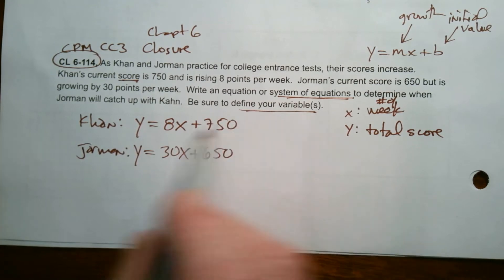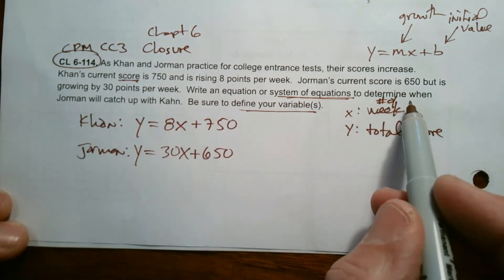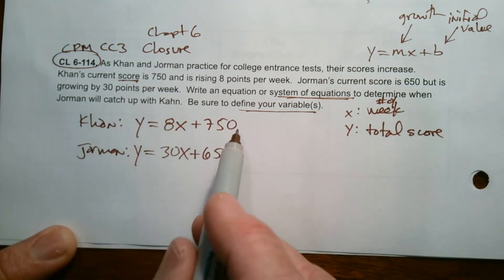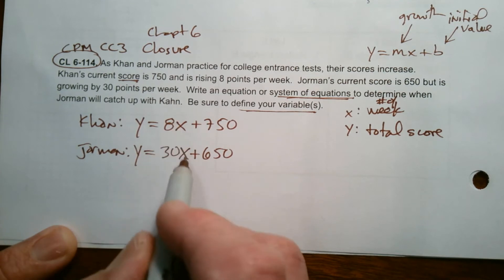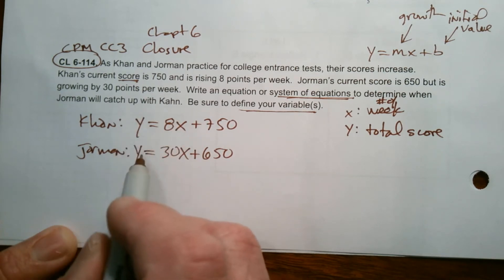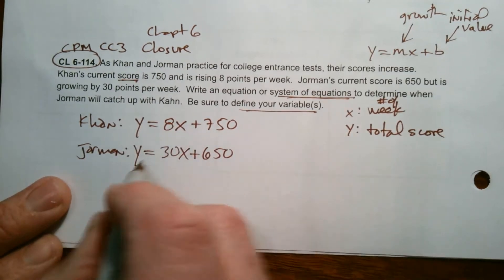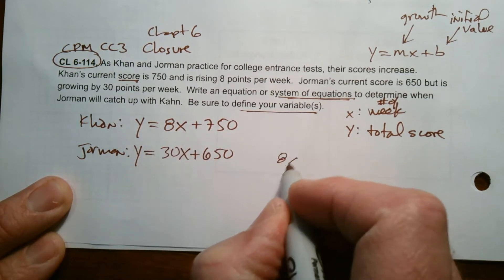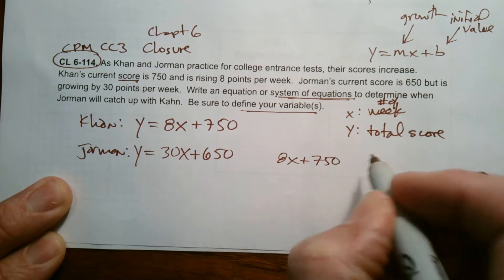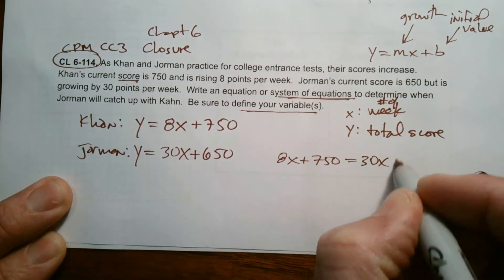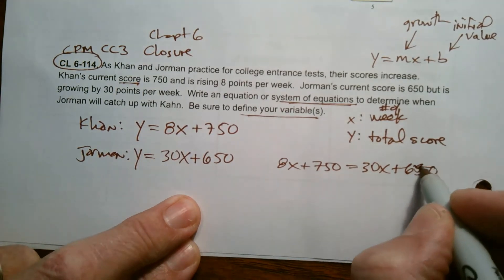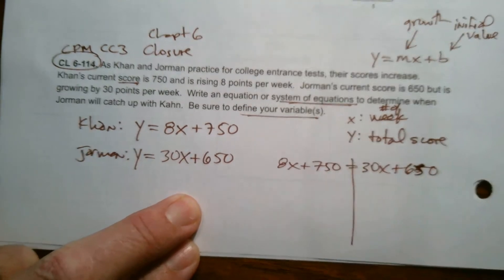Now, in order to figure out when Jorman will catch up with Khan, we want to find out in how many weeks will their total points be equal. So that's solving a system of equations using equal values method. So put these two equal together: 8X plus 750 set that equal to 30X plus 650, and then solve for X.